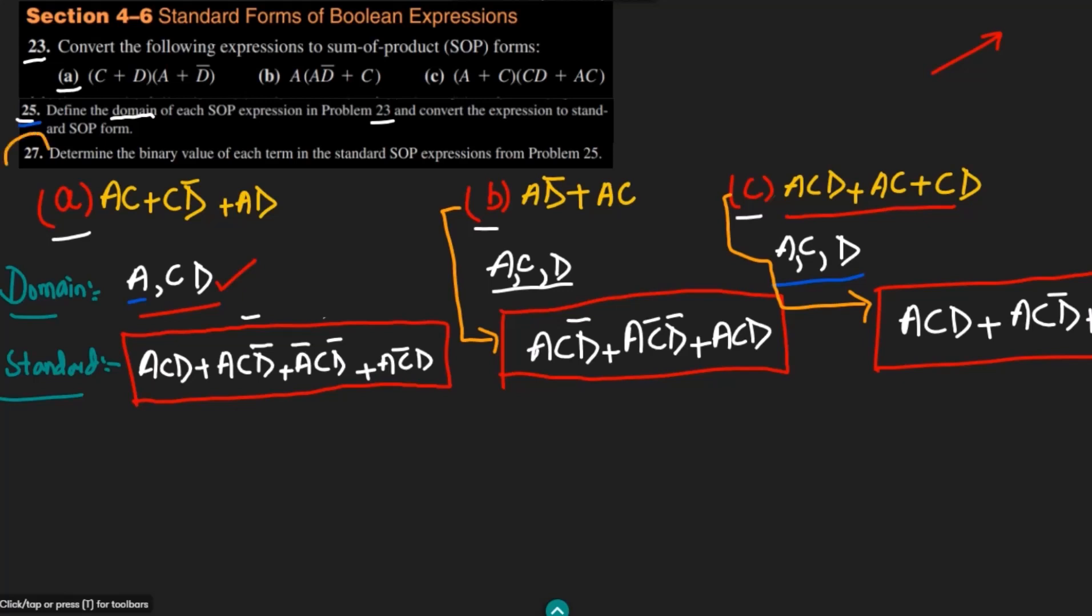Today we are going to solve question 27, and here we have all the standard forms, the domain of these expressions, and the standard forms which are written here. In question 27 we have to determine the binary value of each term in the standard SOP expression from problem 25.